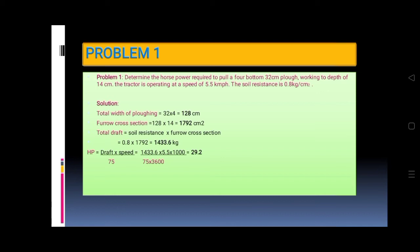Solution: Total width of plowing is 32 times 4 equals 128 centimeter. Furrow cross-section is 128 times 14 equals 1792 centimeters squared.